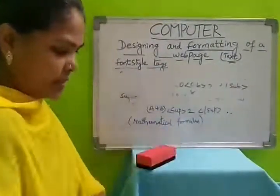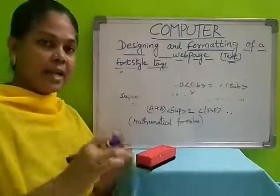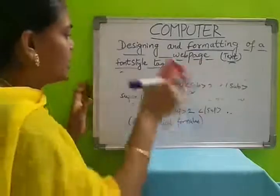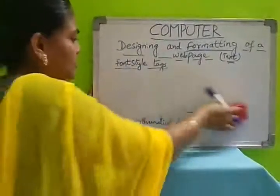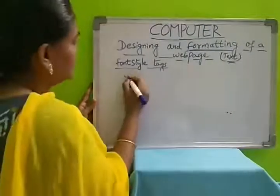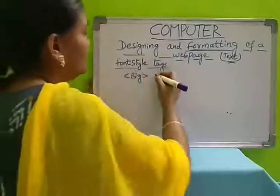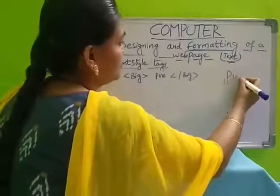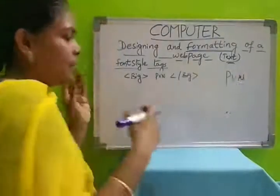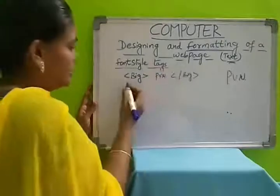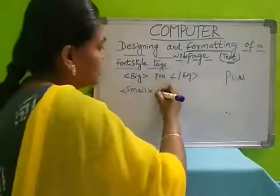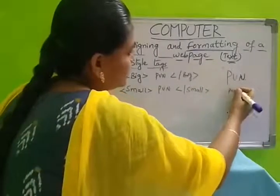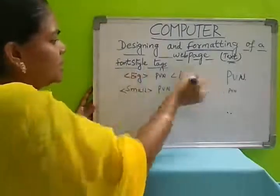So till now the font styles we have learnt are: bold, italic, underline, typewriter, strikeout, subscript, and superscript. We also have big and small. If you write any word or sentence in the big tag, it will be displayed in somewhat bigger size comparing with other text. If you use the small tag, whatever text you write will be displayed in small size. You can also apply bold, italic, underline for these.